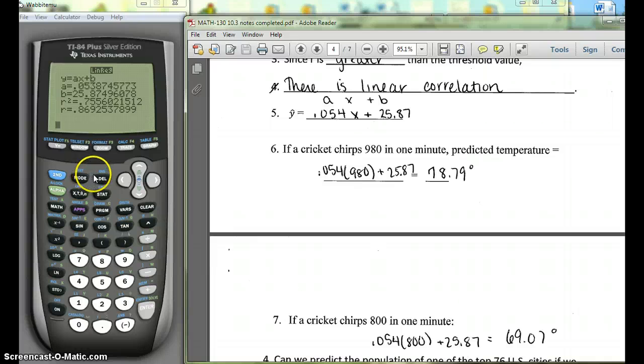So again, you're really putting the data in L1 and L2, and then you're doing stat calc, the lin reg, and that will give us our equation. We put the a in for the slope and the b in for the y-intercept.